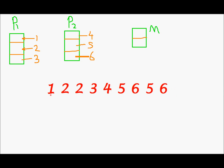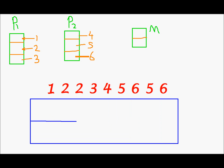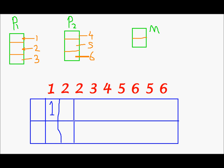Initially the memory is empty. I need to place page 1 in memory, so I'll make one frame occupied by page 1; the other frame remains empty. Next I need page 2, so page 1 remains and I place 2 in the second frame. Now I need page 2 again — I won't have to make any changes to the memory because 2 is already there. So this is 1 and this is 2.